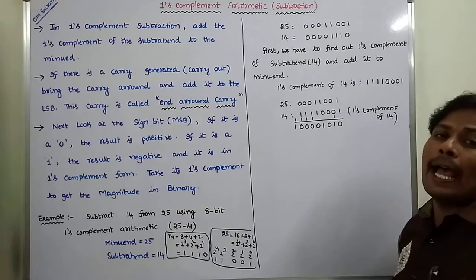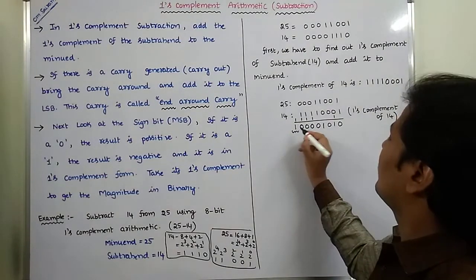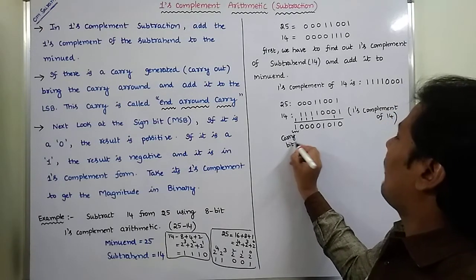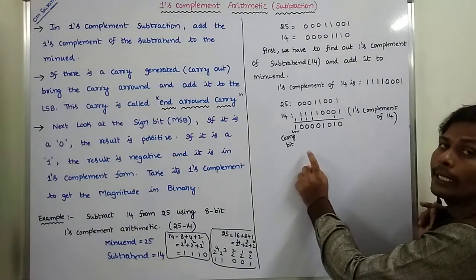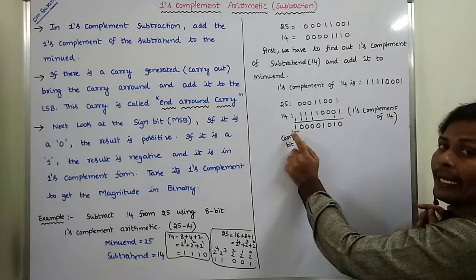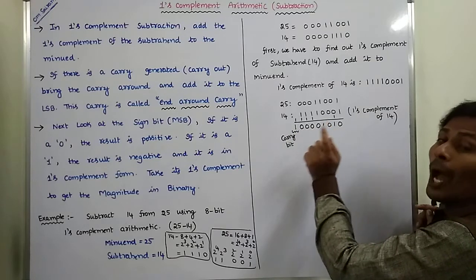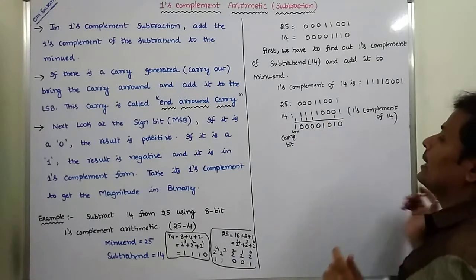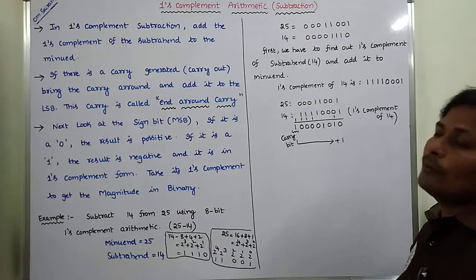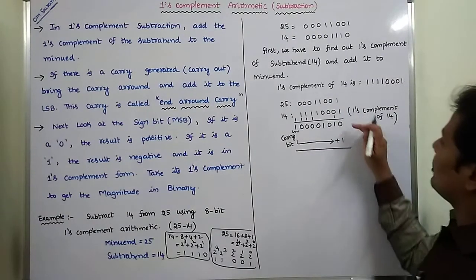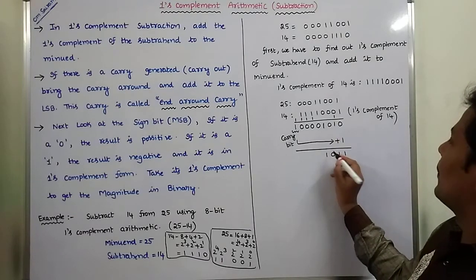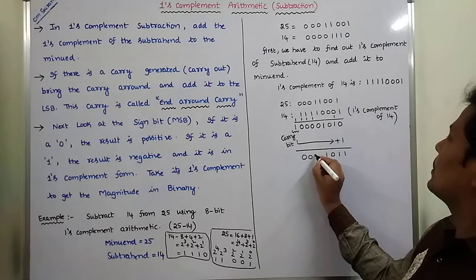This final carry is called the end-around carry. While performing One's Complement arithmetic subtraction, if any carry is generated as carry output, this carry output is added to the LSB bit — that is, plus 1. After adding, the result bits are: 0 plus 1 gives 1, then 1, 0, 0, 0, 0, 0, 0.